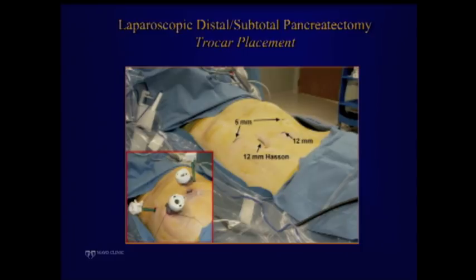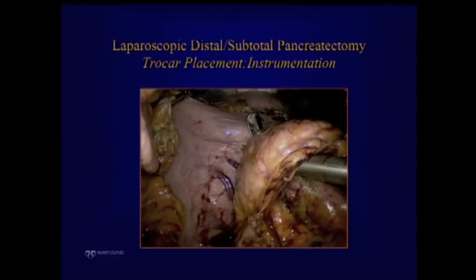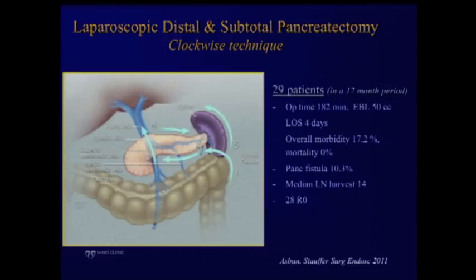This is our port positioning: usually we have four ports — one above the umbilicus, two fives, and a 12mm port. The 12mm port is where we put the stapler for a distal or subtotal pancreatectomy. The surgeon stands to the right of the patient and usually operates from these ports. Regarding instrumentation: basic instrumentation for advanced laparoscopic surgery, but one instrument I highlight is the finger retractor — I use it in almost every single pancreas case. It's very useful for dissecting under tight spaces.